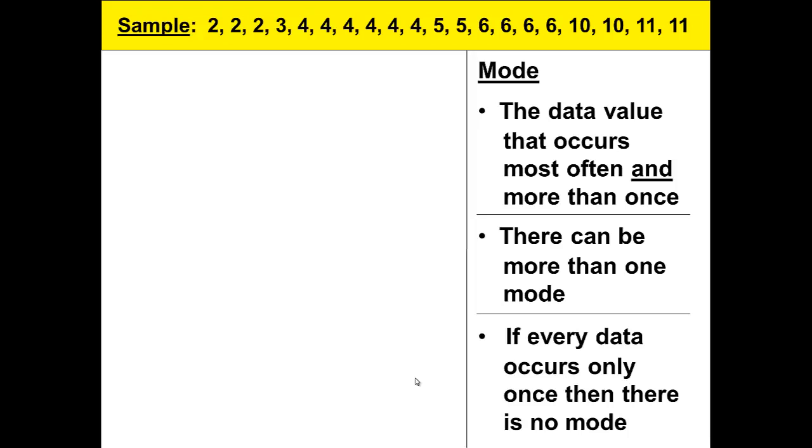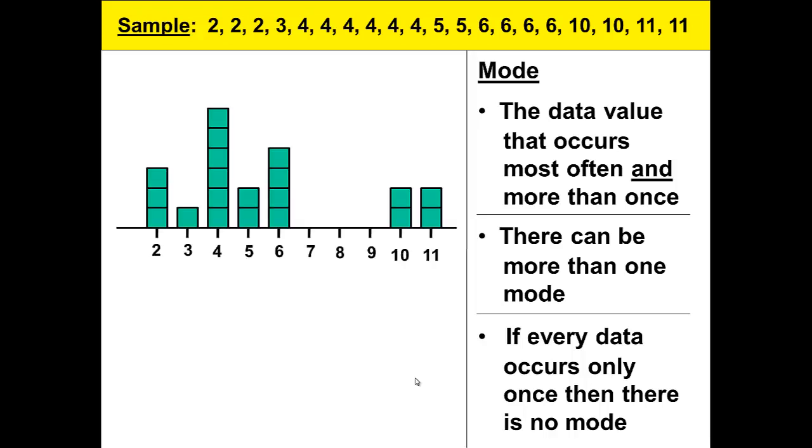If every data only occurs once, then there is no mode. Let's look again at the picture of our data. It becomes easy to see that we have more fours than any other number. The mode is 4.